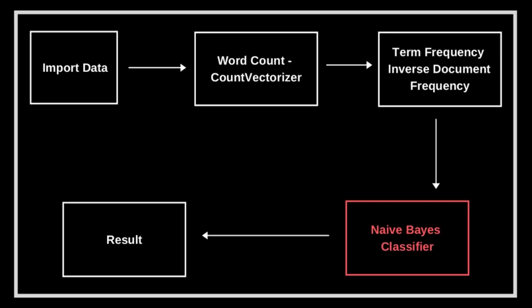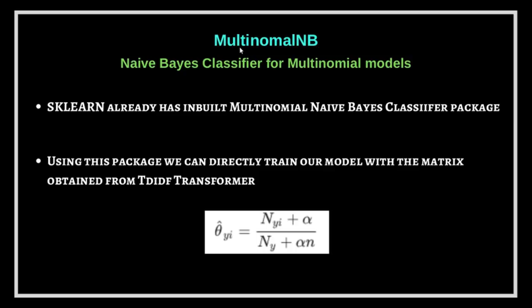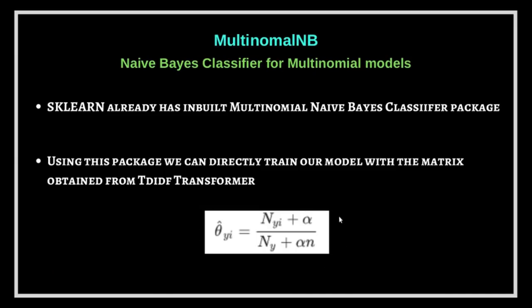The next step is the Naive Bayes classifier. We are using Multinomial NB, which is part of the Naive Bayes family. Scikit-learn has already implemented this Multinomial Naive Bayes classifier, so we just need to import it. Multinomial NB is used for multinomial models that have various distinct features. The output from the TF-IDF transformer will be the input to this classifier, along with the target categories — atheism, computer graphics, religion, etc.